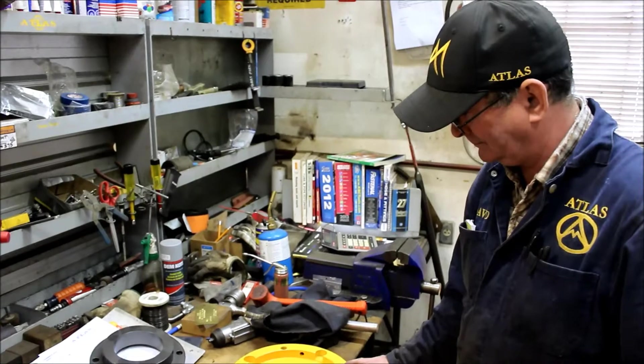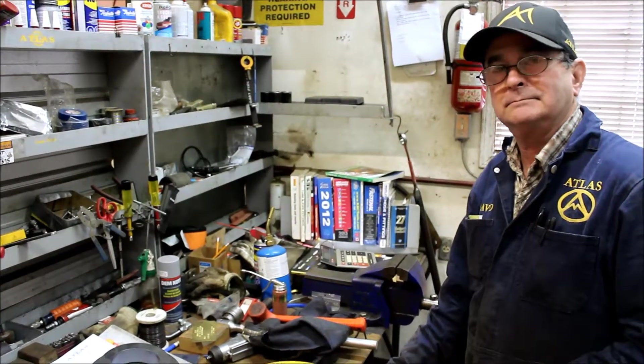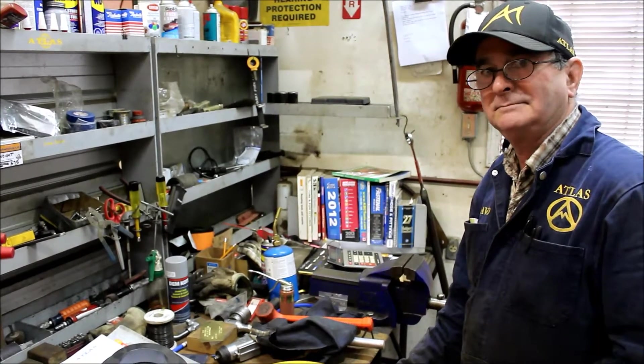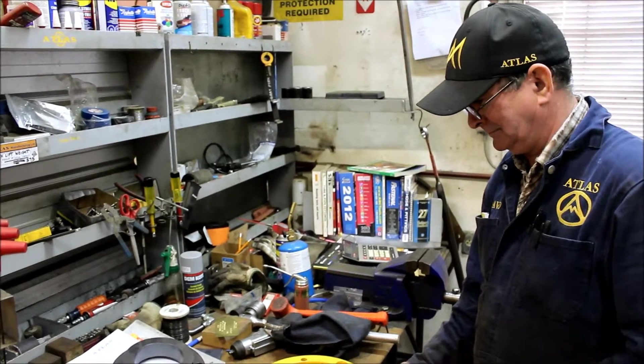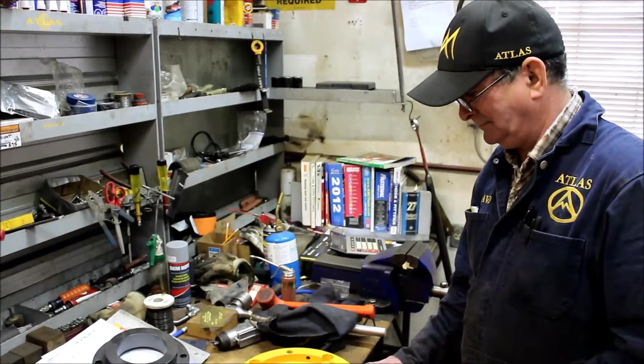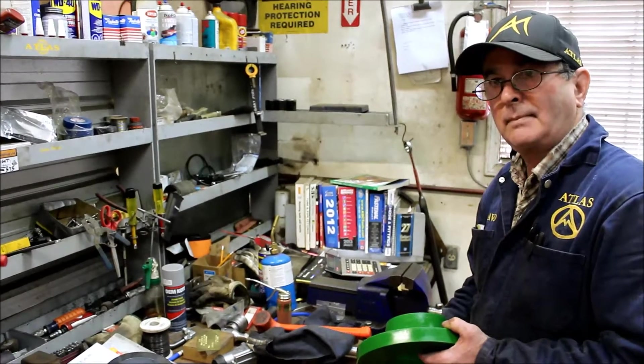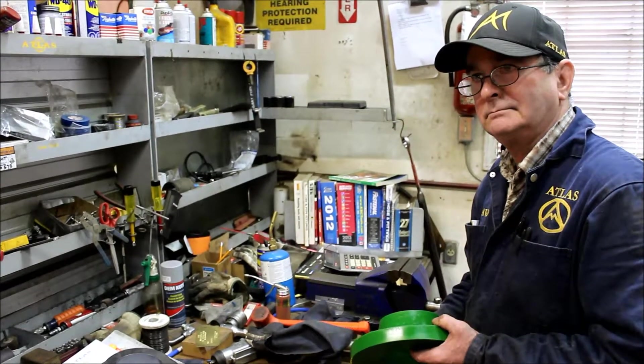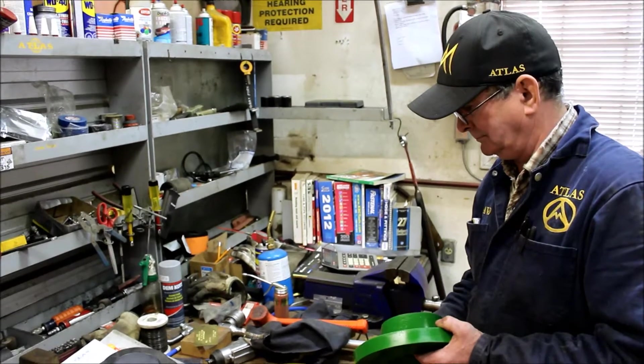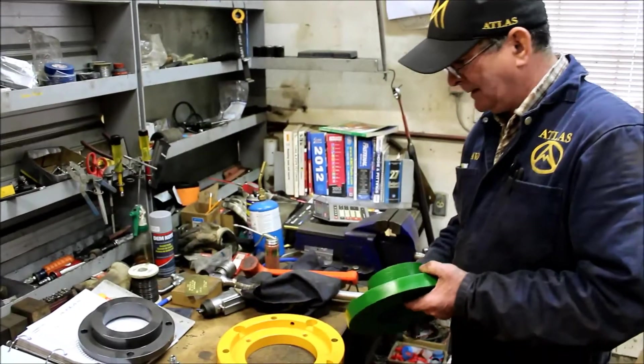We're back here at Atlas Manufacturing in British Columbia, Canada. We manufacture our patented hydraulic casing hammers, casing jacks, hydraulic power packs. And we're here with our shop foreman again and head hammer assembler. He's going to show us how to put the top seal in, top wear ring in an Atlas hammer.